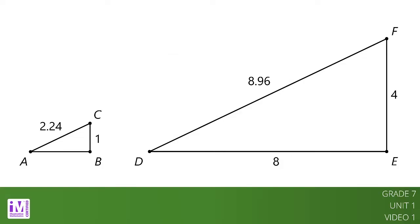In triangle A-B-C, the measure of angle C is 63 degrees. What does that tell us about the scaled copy?